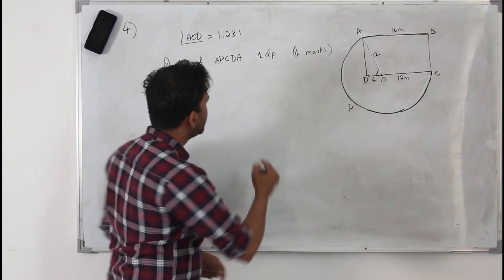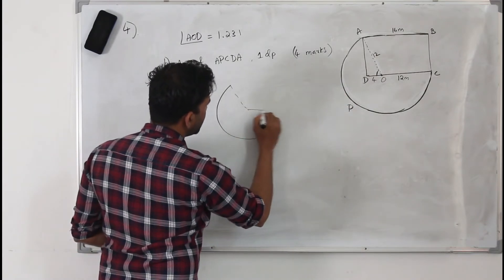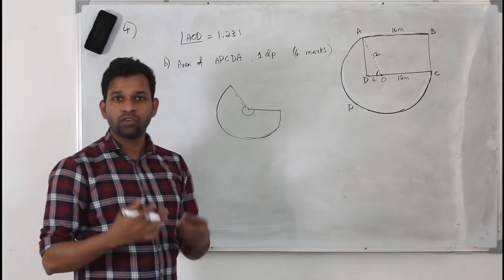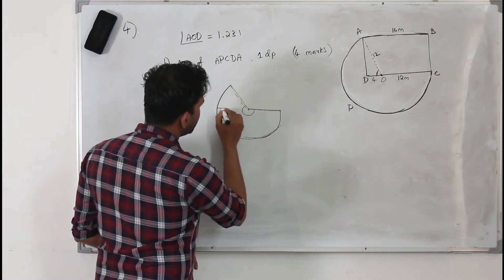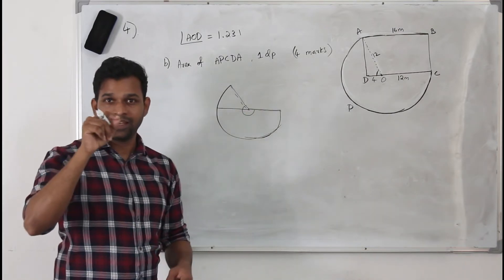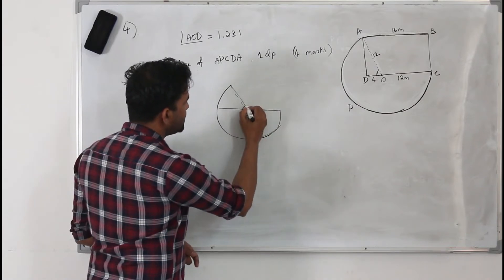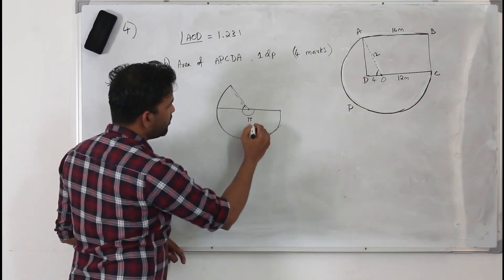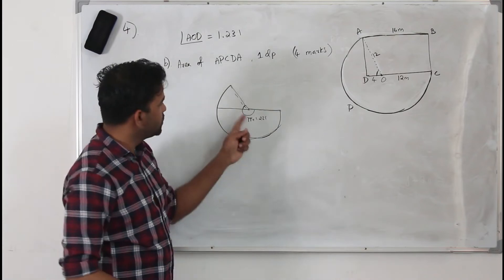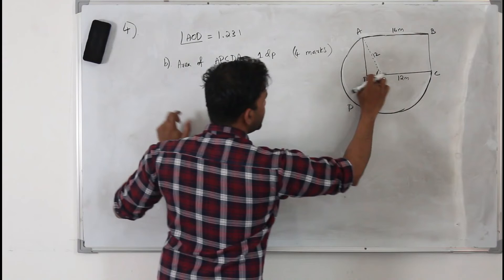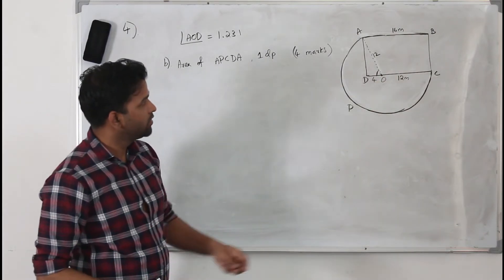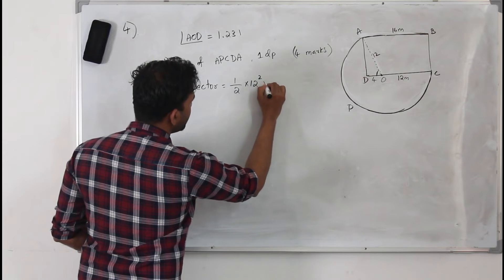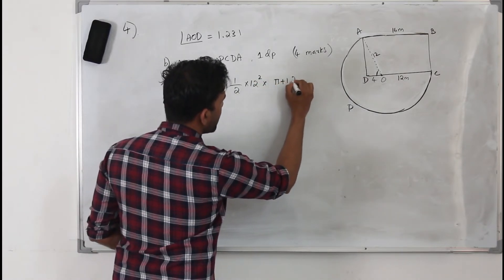Take a look at this major sector. You need to know the angle of the sector in radians so you can apply the formula: half r squared theta. If you take the semicircle, the angle around the point is 2 pi, so the semicircle angle is pi. This little angle we proved is 1.231 in Part A. So the total angle for the major sector is pi plus 1.231 radians.